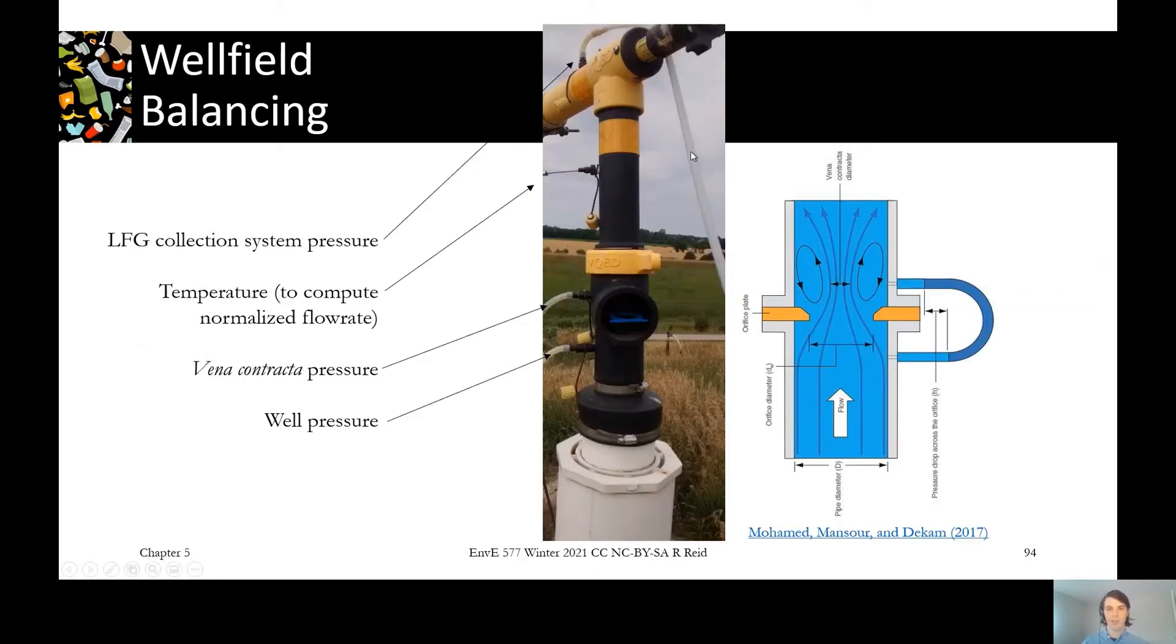Here is what it would look like while you're doing your balancing. So here's our wellhead here on the top of our well. This one's got a PVC casing and the wellhead valve is up at the top here, but it also has all these different ports that are used for balancing. So the bottom port, if you measure the pressure there, that's indicative of the actual pressure inside the well that's being exerted throughout the depth of the well casing. And that spreads out through the waste to pull the landfill gas in.